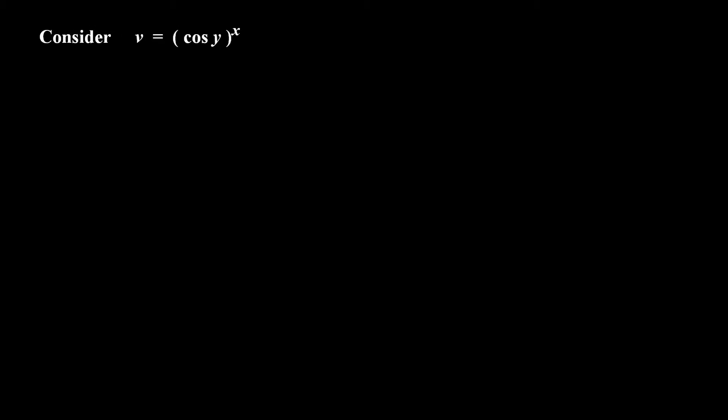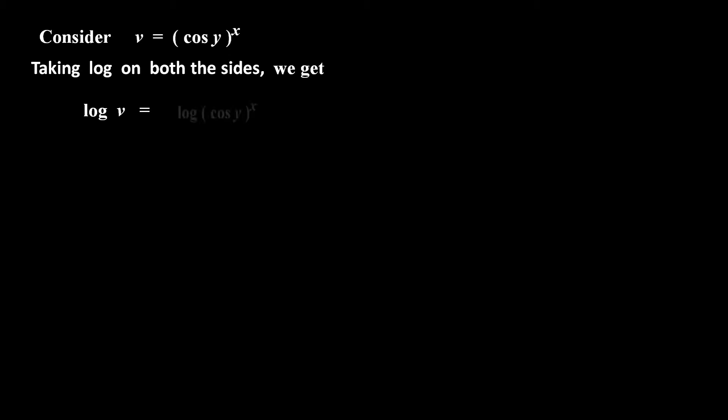Now consider the second part. v is equal to cos y raised to x. To make this function simple, taking log on both sides, we get log v is equal to log of cos y raised to x. So, by using law of exponent of logarithm, log v is equal to x into log of cos y.